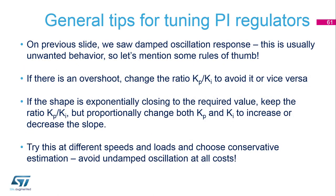We saw a damped oscillation response, which is usually unwanted behavior. We have some rules of thumb that can be applied. If there is an overshoot, we have to change the ratio KP divided by KI to avoid it.